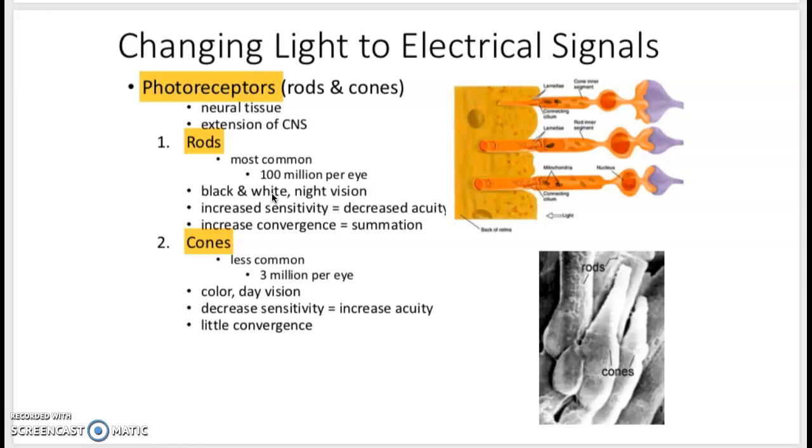Cones, there are less of them. Cones give you your color vision, and they have increased acuity or discrimination. So we kind of know this just anecdotally. During the day, you can see much more clearly than you can at night. At night, we just need some general picture of what we're looking at versus during the day, we need a more specific picture.